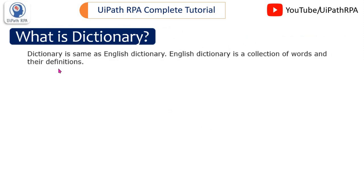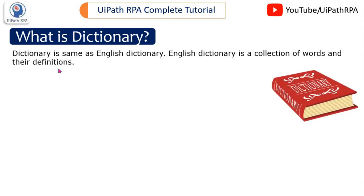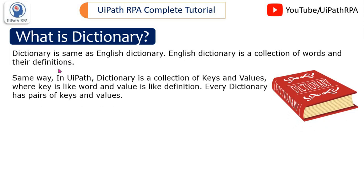What is dictionary? Dictionary is same as English Dictionary. English Dictionary is a collection of words and their definitions. In English Dictionary you get the word and we get the definition also in different languages. Same way in UiPath, dictionary is a collection of keys and values where key is like word and value is like definition. Every dictionary has pairs of keys and values.